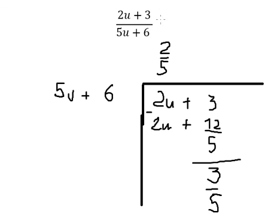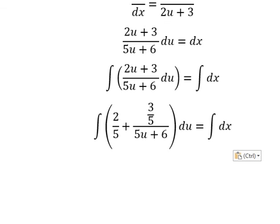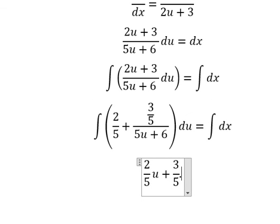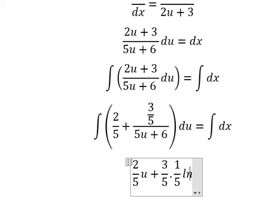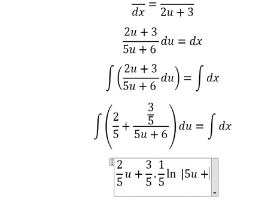And we will have 3 over 5. So that means this one we have 2 over 5 plus 3 over 5 over 5u plus 6. So we can get the final answer. The integration of 2 over 5, we have 2 over 5u. The integration of this one, we have 1 over 5 ln of 5u plus 6.